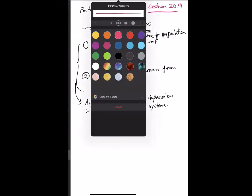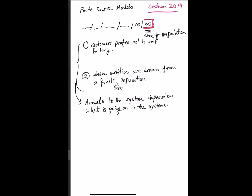The second scenario is when entities — customers, parts, or entities in general — coming to the system are drawn from a finite population. That's the scenario when the last assumption in the definition of a queuing system does not hold. When I put infinity in the very last part of the definition, I assume the size of the population is infinite. However, if the size of the population is finite, then the number of entities that can come to the system depends on how many are already in the system. Those are the types of systems we put under the category of finite source models, and a good number of queuing systems fall in this category.